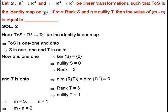T is onto, which implies the range space of T equals the codomain R³, so rank of T equals 3. Again by the rank-nullity theorem applied to T mapping R⁴ to R³, nullity of T equals 1. That is, N equals 1. Therefore M minus N equals 3 minus 1 equals 2, so the answer is 2.